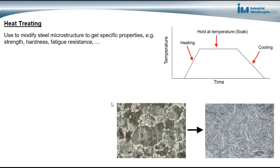Heat treating is used to modify a steel's microstructure to get specific properties — that is strength, hardness, fatigue resistance, and so on. Heat treatment involves heating the steel up, holding it at a certain temperature for a certain period of time, and then cooling it. In some cases the cooling rate is important, and in other heat treatments it's not. In many cases we're using heat treatment to cause what's called a phase transformation — to go from one or two phases to a different phase. This is showing going from ferrite and cementite to martensite. Not all heat treatments involve phase transformations. Regardless of the heat treatment, the purpose is to get a certain microstructure and to get certain properties in the steel.